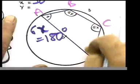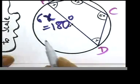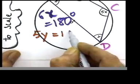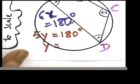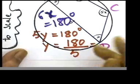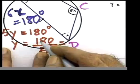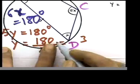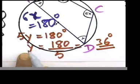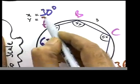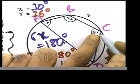Opposite angles add up to 180 again — the same rule. So 4y plus 1y equals 5y, and 5y equals 180. Divide both sides by 5: 180 divided by 5 equals 36. So y equals 36. Fill in the blank — it simply says 36. They didn't ask you to find the full angle.